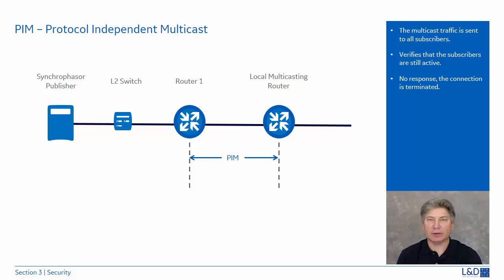To ensure the subscribers are still active, the local multicasting router notifies the subscriber to confirm whether the subscriber is still online. If there is no response from the subscriber, the communication link is broken. A protocol called Protocol Independent Multicast, also known as PIM, monitors the networks to make sure that the subscribers are still requesting data. It has an automatic breakdown feature which means it will drop the link to a specific subscriber if the requests stop.